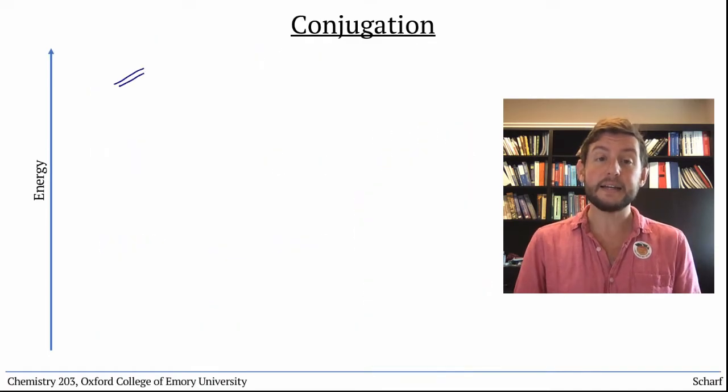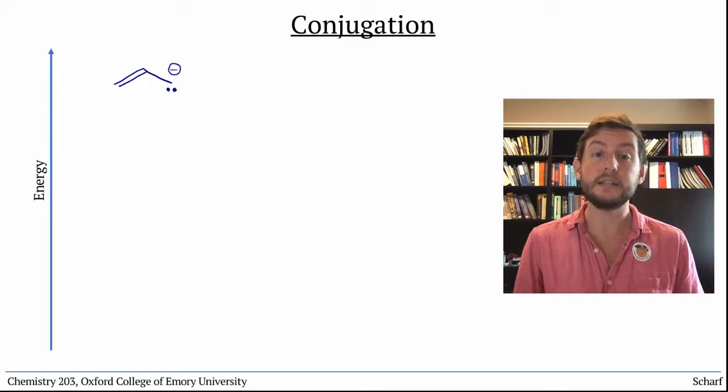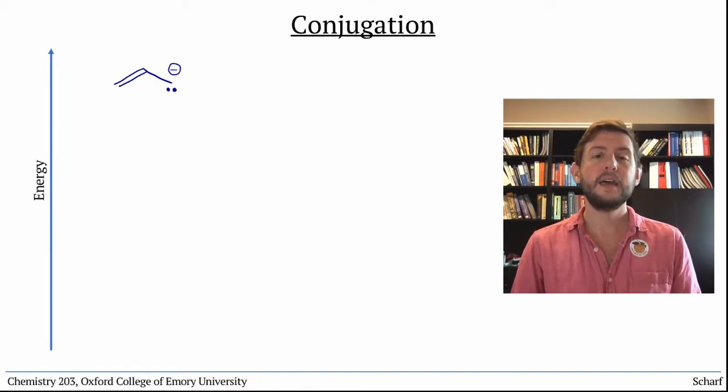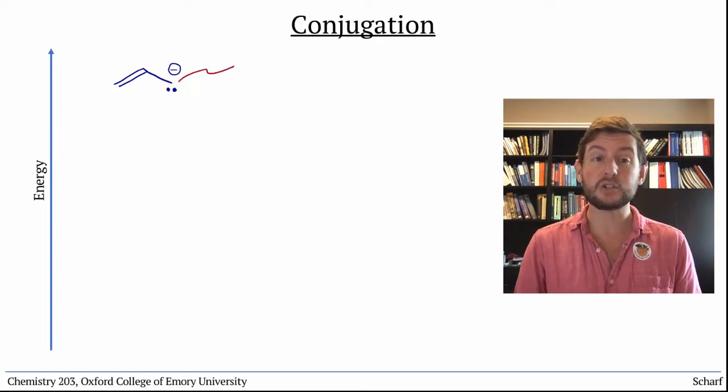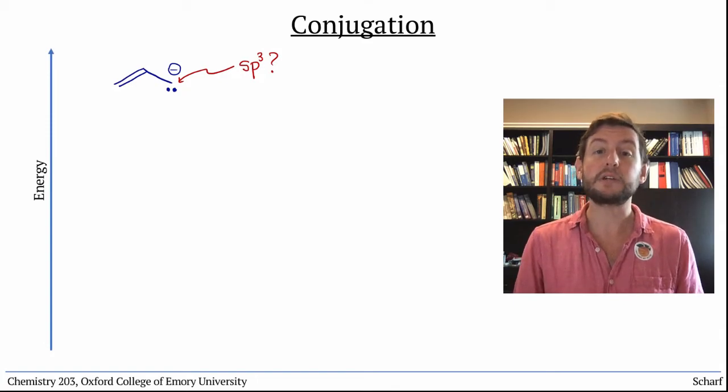The allyl anion is also a resonance-stabilized conjugated system, but it has one extra layer of complexity. If I was to ask you to look at the Lewis structure and tell me the hybridization of that negatively charged carbon, you might tell me that it looks sp3 hybridized. And I'd understand why you might say that. It looks like it has four electron groups.